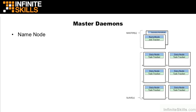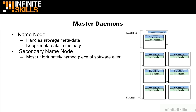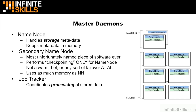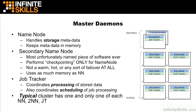Zooming in on the master daemons: the name node handles all of the storage metadata, keeps that metadata in volatile memory for fast lookup, and also persists the data to disk. The secondary name node is perhaps the most unfortunately named piece of software ever — it simply performs a checkpointing function only for the name node. It is not a warm, hot, or any kind of standby mechanism at all, and it uses as much memory as the name node. The job tracker master daemon coordinates all the processing of the stored data and handles the scheduling of job processing. A typical cluster will only have one each of the name node, the secondary name node, and the job tracker.